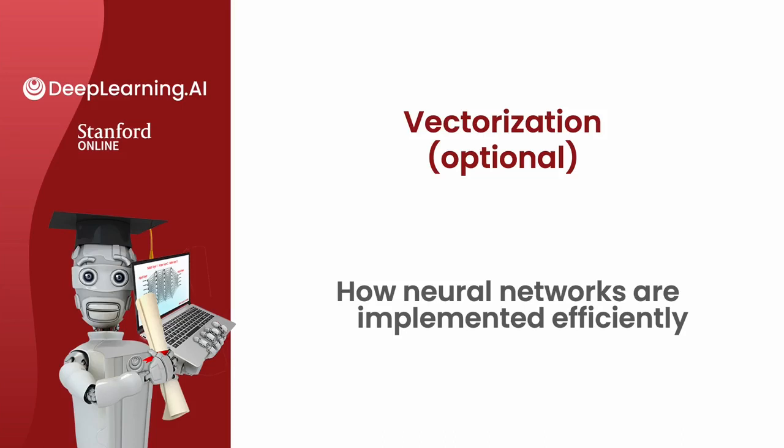One of the reasons that deep learning researchers have been able to scale up neural networks and build really large neural networks over the last decade is because neural networks can be vectorized. They can be implemented very efficiently using matrix multiplications.